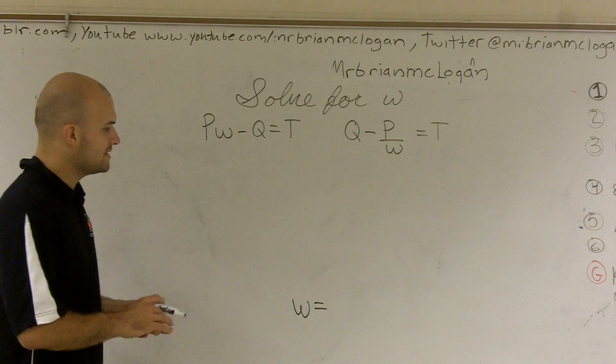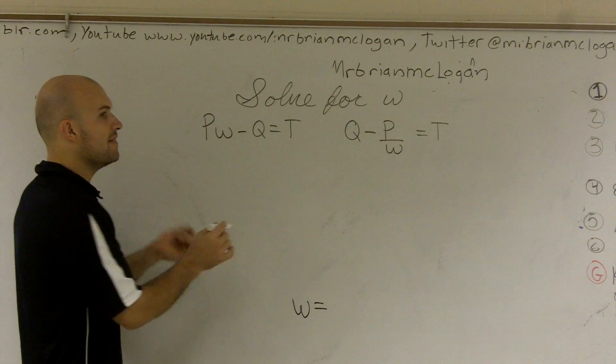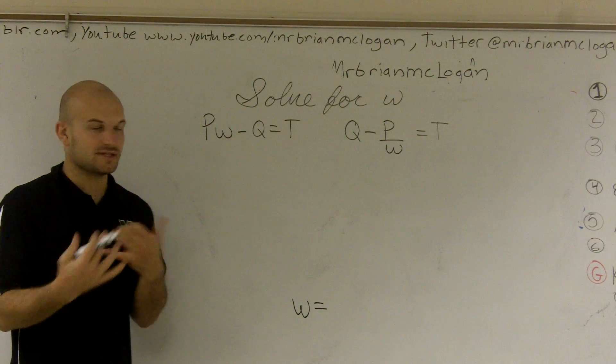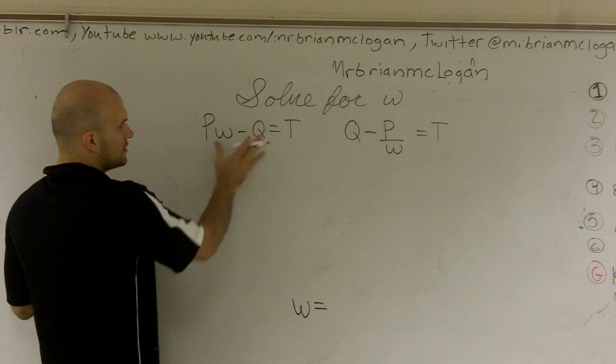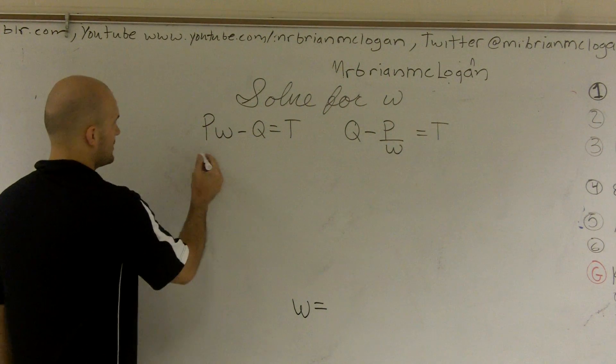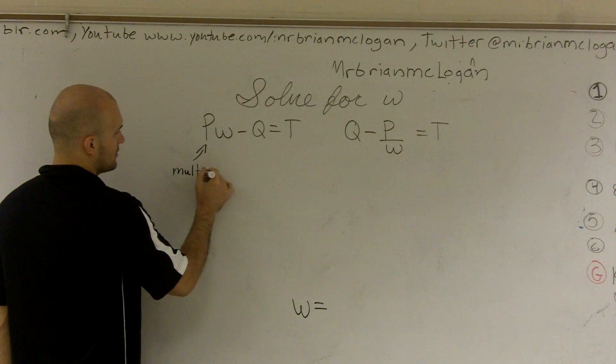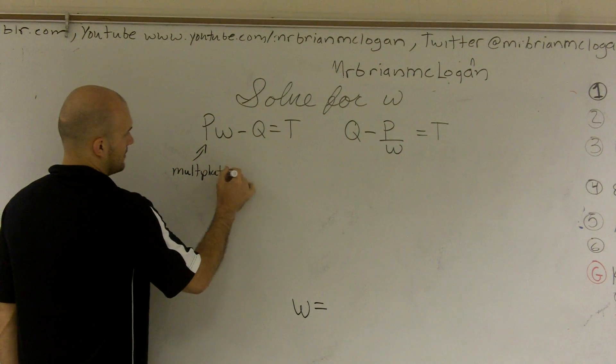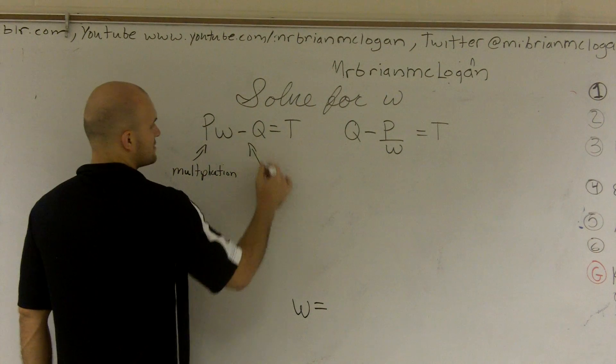So what I need to do is I need to look at what's happening to my variable w, and then just undo that by using inverse operations. So I look over here, and I have a couple things that are happening. First, I have multiplication, right? And I have subtraction.